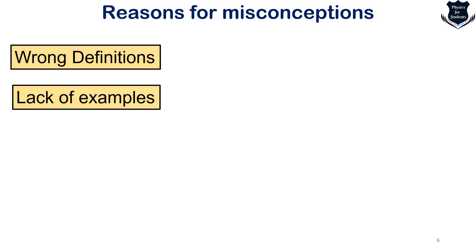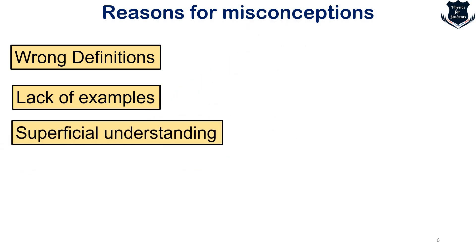As soon as I tell that gravity attracts things towards the center of the earth, if I say I cannot give you an example, you will start guessing with a lot of things which are improbable and not true. But as soon as I say that if I drop a glass it will break on the floor, you get a picture. That is why lack of examples leads to misconceptions.